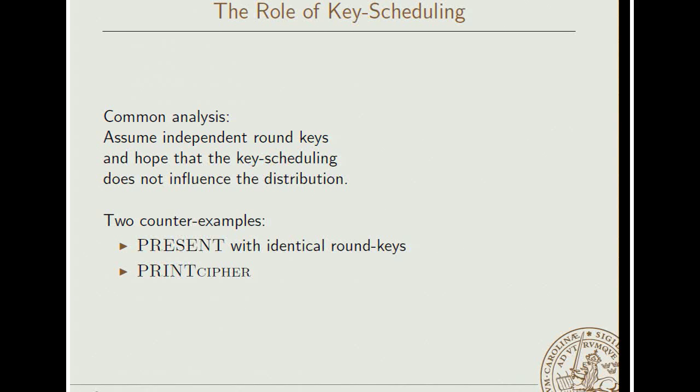Now, the next two examples deal with the key scheduling. That is how you pick your round keys. One common analysis is to assume independent round keys. Do some modeling. For example, getting this Gaussian on the previous slide. And then you replace your independent round keys with dependent keys coming from some key schedule. And then the question is, how valid is your analysis? I will be presenting two examples of what can happen when you have clearly dependent round keys. But still, you replace these independent round keys with dependent round keys.